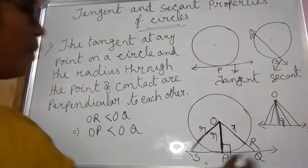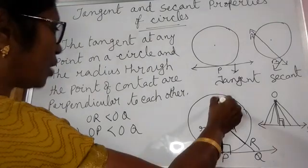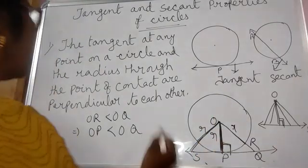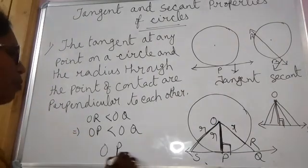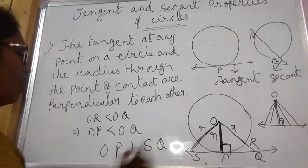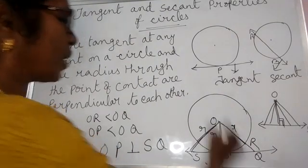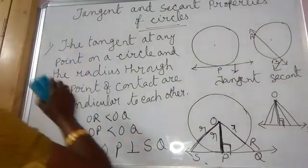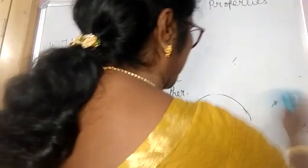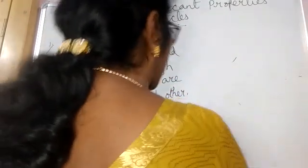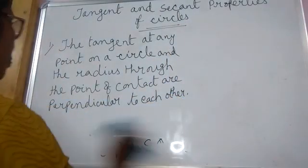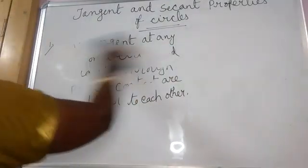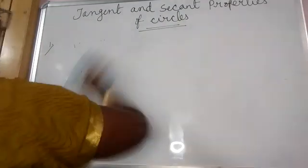So the distance from O to any point on the tangent line is always greater than the distance from O to P, which is the radius drawn from the center to the point of contact of the tangent. Therefore, the tangent at any point of a circle and the radius through that point of contact are perpendicular to each other — OP is perpendicular to the tangent drawn at the point of contact. The second property is just the converse of this.